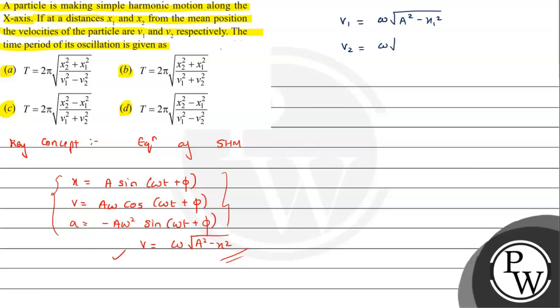At the other position, we can write v2 = ω√(A² - x2²). So here are two relations. Let's call these expression 1 and expression 2. We'll square and subtract them. Why are we doing this? Because looking at the options, we need to eliminate A.